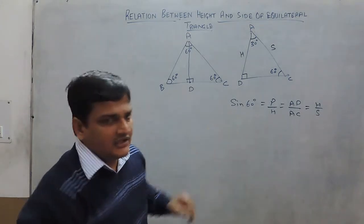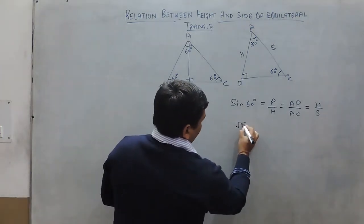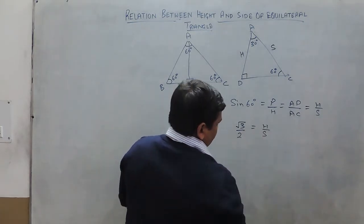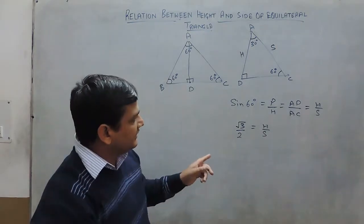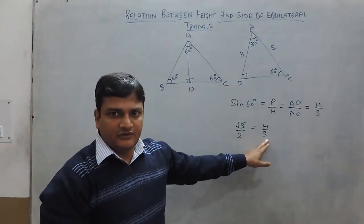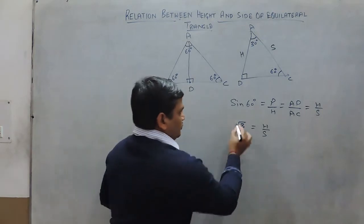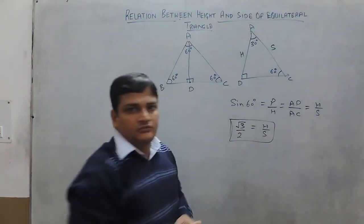Since sine 60 degrees equals root 3 by 2, therefore H upon S, that is height of equilateral triangle and S is the side of equilateral triangle, are in the ratio of root 3 is to 2. Thank you.